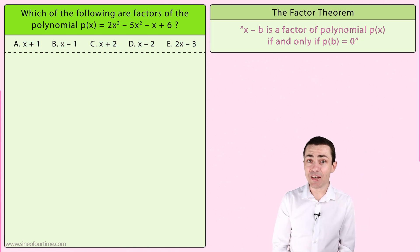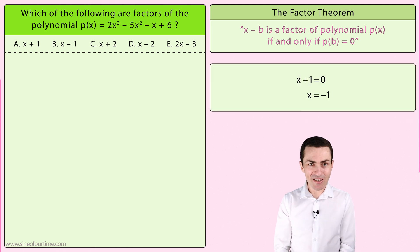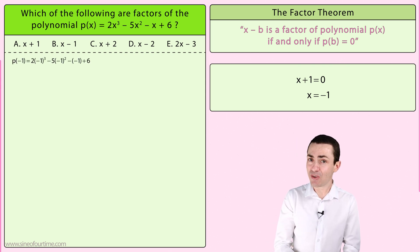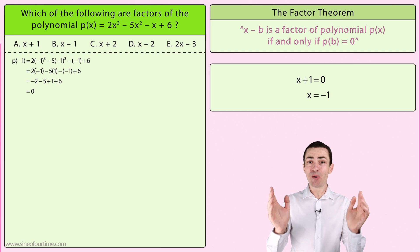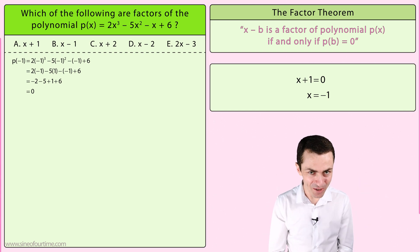The value of x that makes the first binomial equal to zero is negative 1. So we substitute negative 1 in place of x in the polynomial. When we simplify we get zero, which tells us that x plus 1 is a factor of the polynomial.